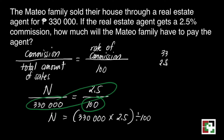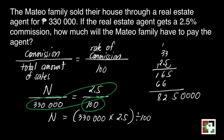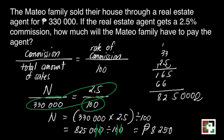That's 330,000 times 2.5 divided by 100. We will get 825,000 divided by 100. We can cancel the zeros there and what's left is 8,250 pesos. That's the amount that the Mateo family will pay the agent.